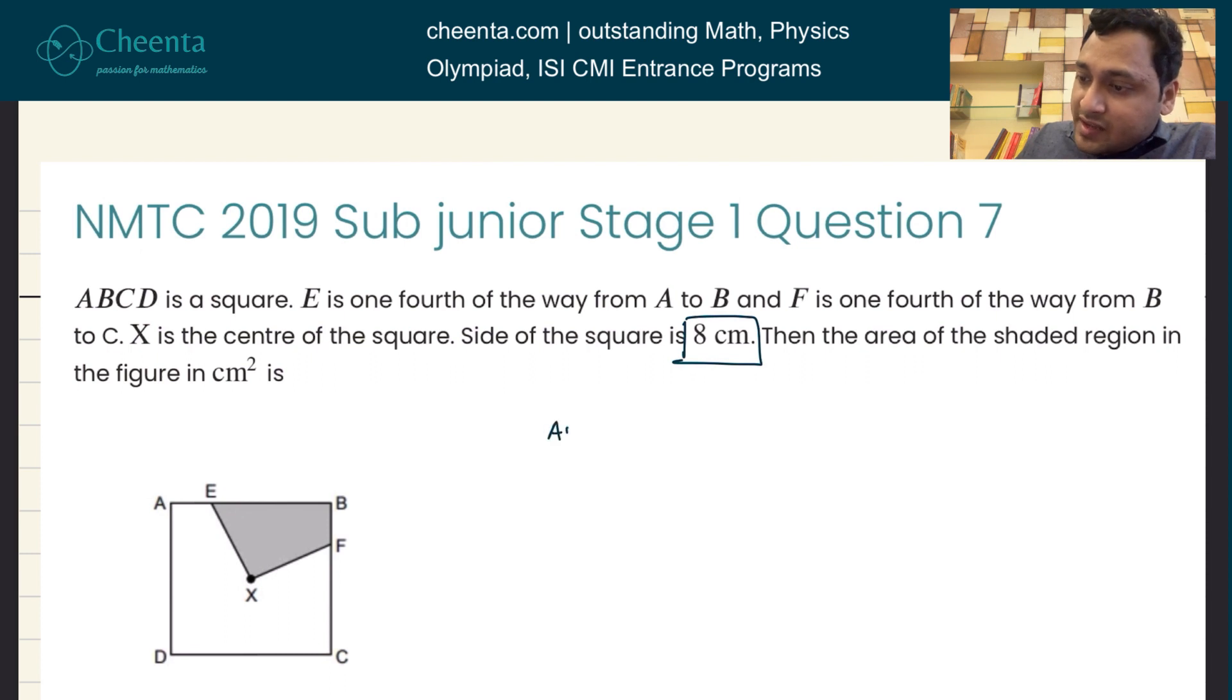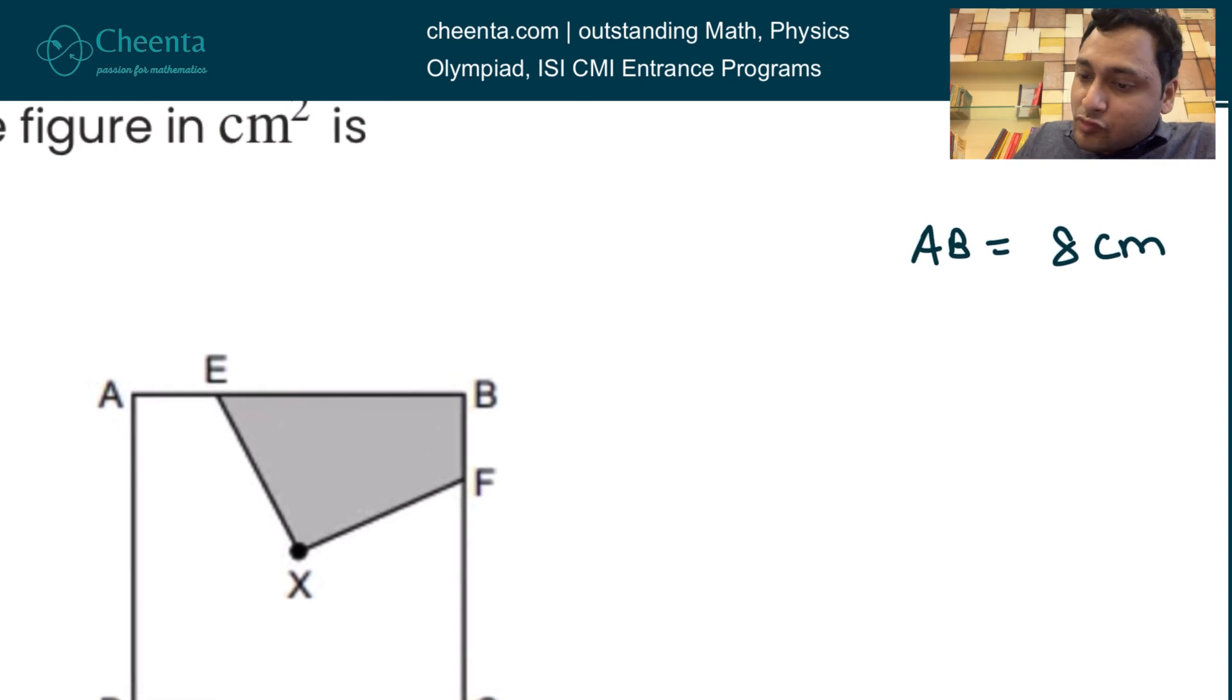It's also given that AE, this little portion here, is one-fourth of AB, so of course AE is 2 centimeters. Similarly, BF is one-fourth of BC, so that's also 2 centimeters.